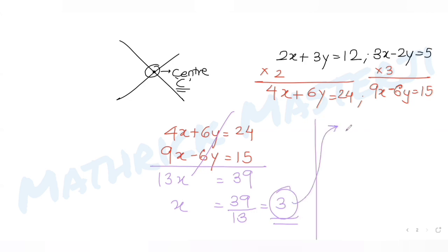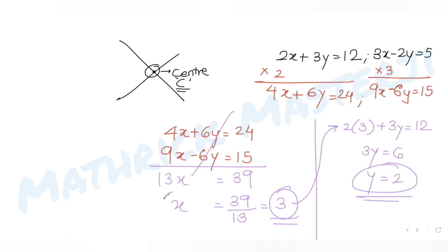With x = 3, I substitute into the first equation: 2(3) + 3y = 12, so 3y = 6, giving y = 2. Therefore, the center of circle C is (3, 2).